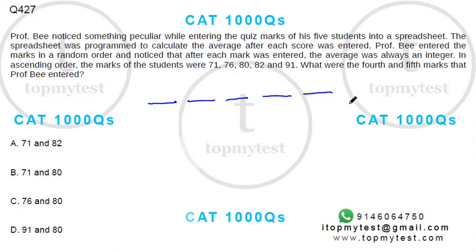After he enters the fifth mark, what is the total? The total will be the sum of all the marks. That's 162 plus 82, 44, 324 — 400 is the total.